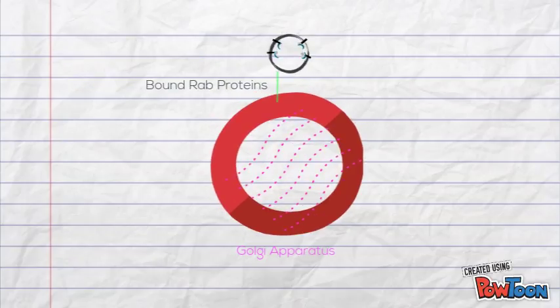RAP proteins are complementary to the tethering proteins that are located on the cytosolic surface of the target membrane. Once the tethering protein has captured a vesicle with the matching RAP protein, transmembrane proteins called snares assist with the docking of the vesicle.